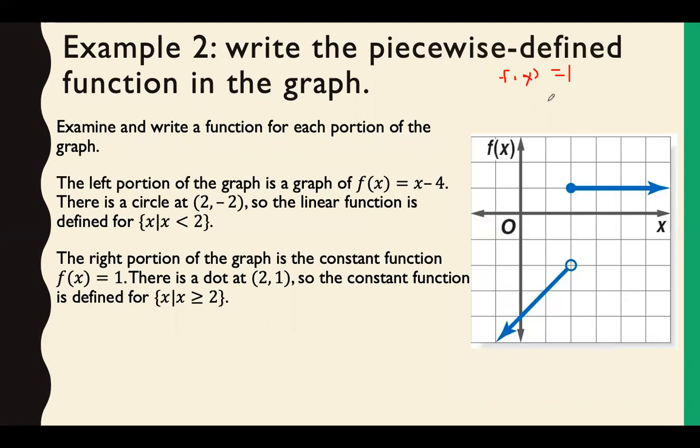And since there's a circle at 2, negative 2, this is defined for when x is less than 2. The right portion is a constant. Like we said, f of x equals 1. And since there's a closed circle at 2, 1, our inequality would be x such that x is greater than or equal to 2. So here's our piecewise: f of x equals x minus 4 if x is less than 2, 1 if x is greater than or equal to 2.